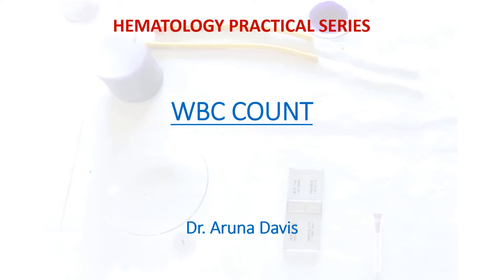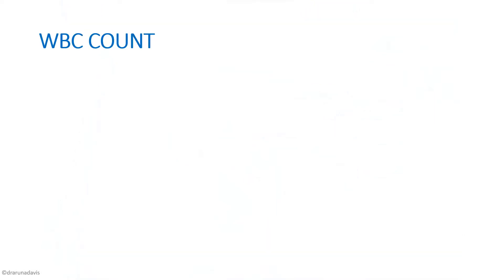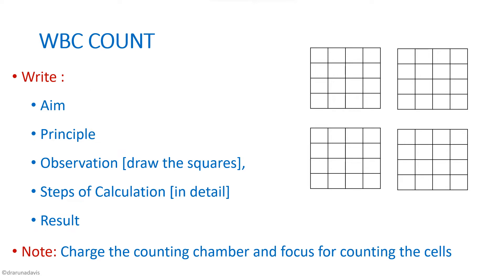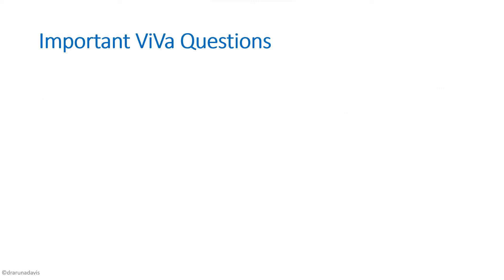Hi, in this video we are going to discuss some important questions that can be asked for the experiment WBC count. When this experiment is asked, you have to write the aim, the principle, the observation wherein you have to draw the squares, then the steps of calculation in detail and finally the result. You just have to charge the counting chamber; you need not count the cells unless the examiner asks you to. Now we will see some important viva questions.